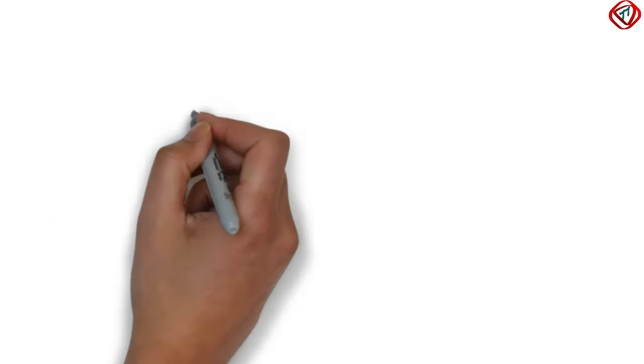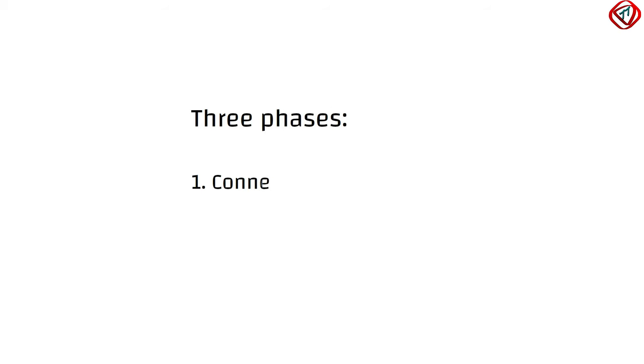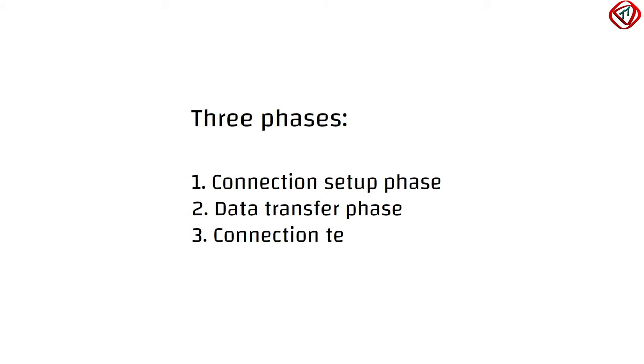Communication in circuit switched network involves three phases: connection setup phase, data transfer phase, and connection teardown phase.